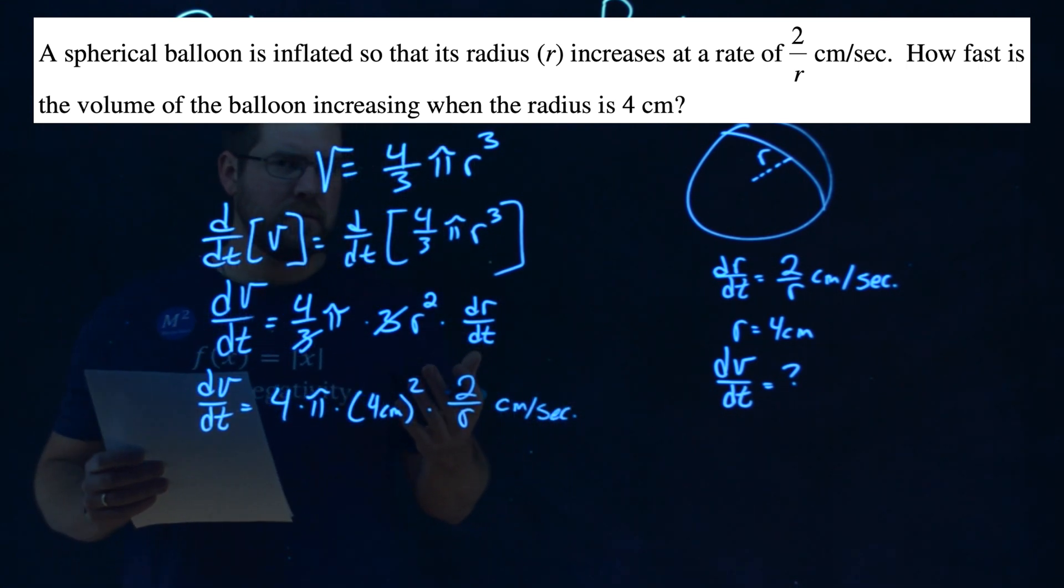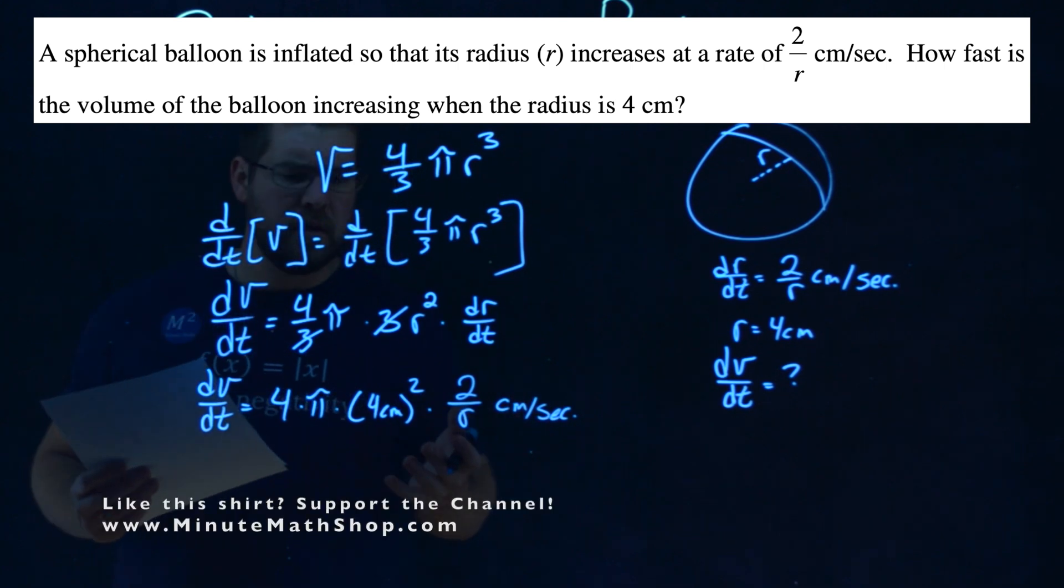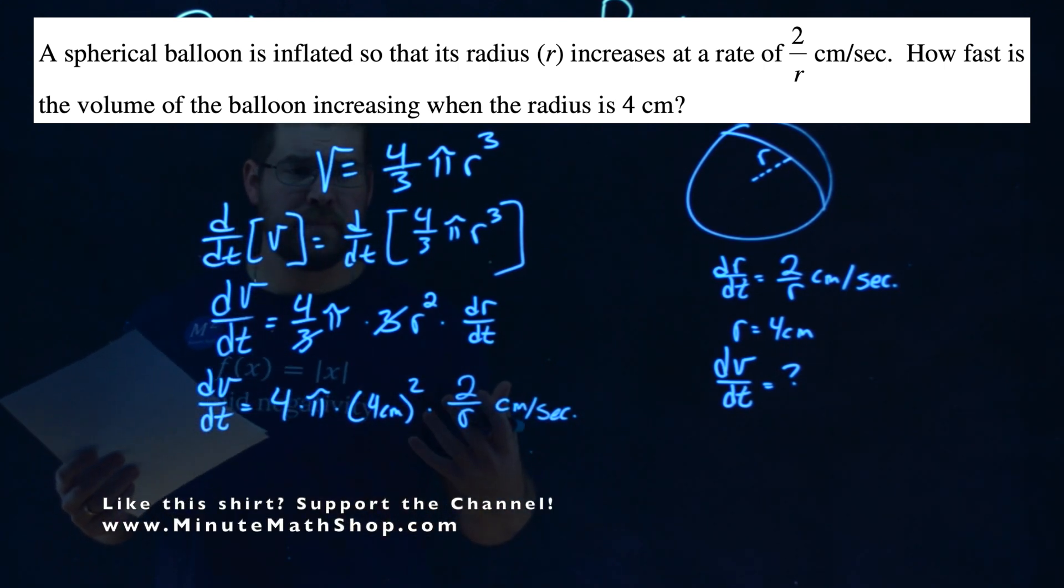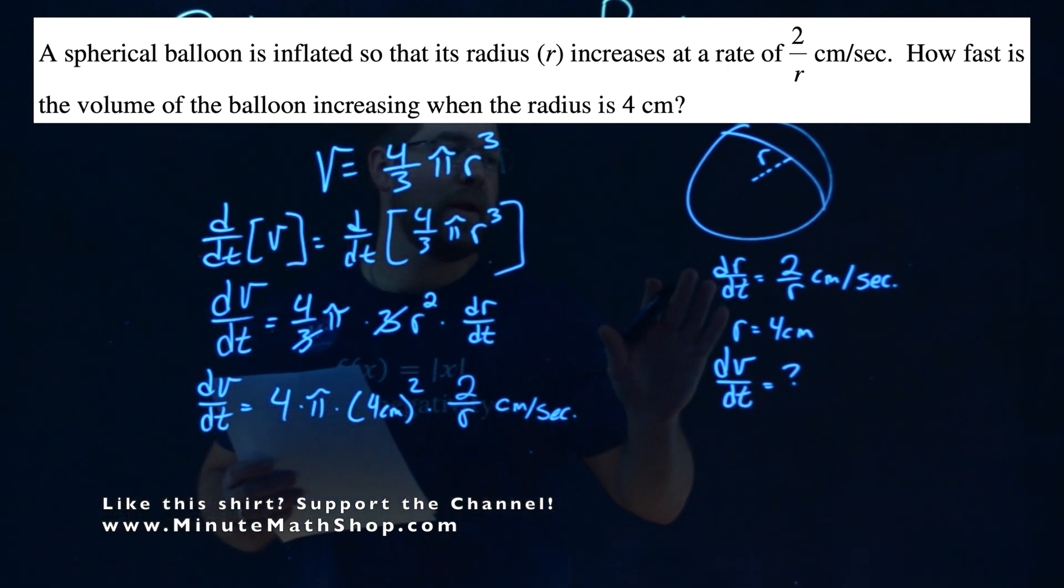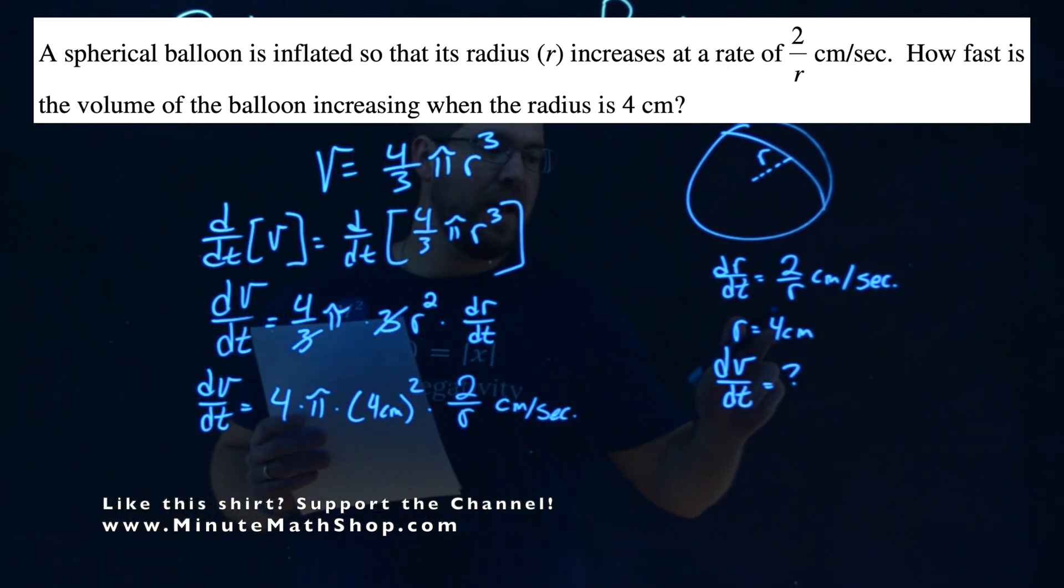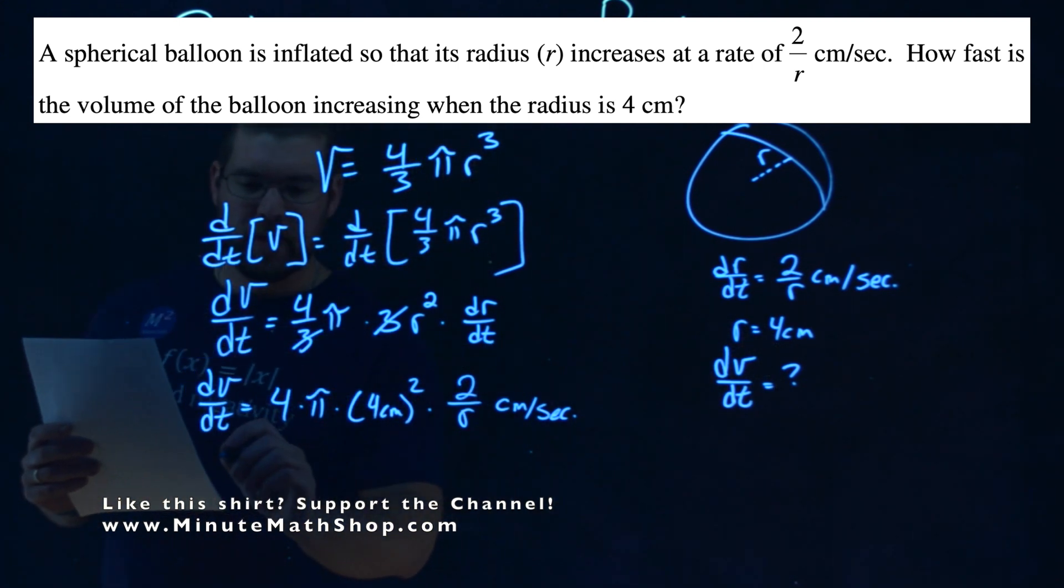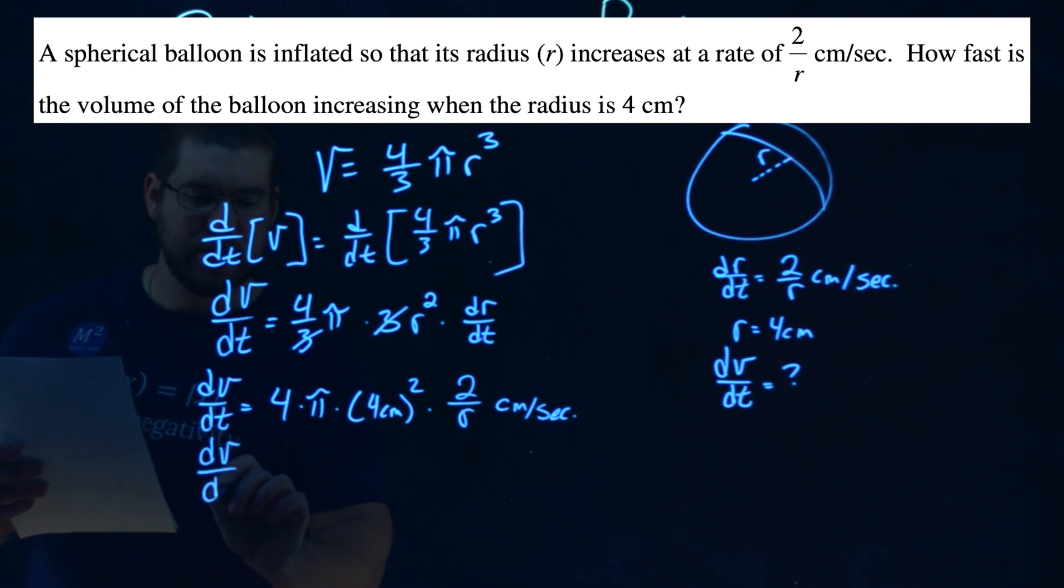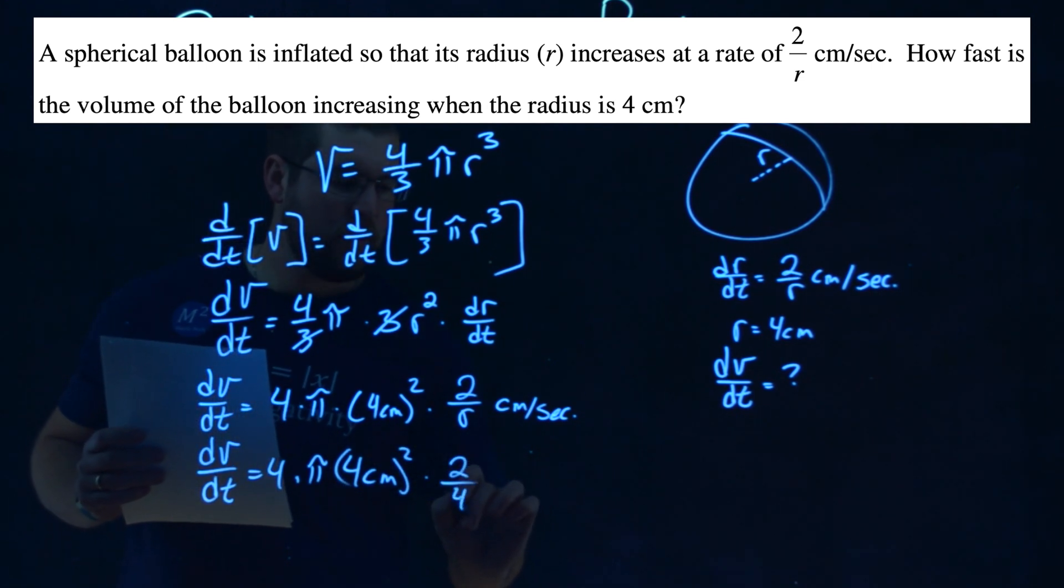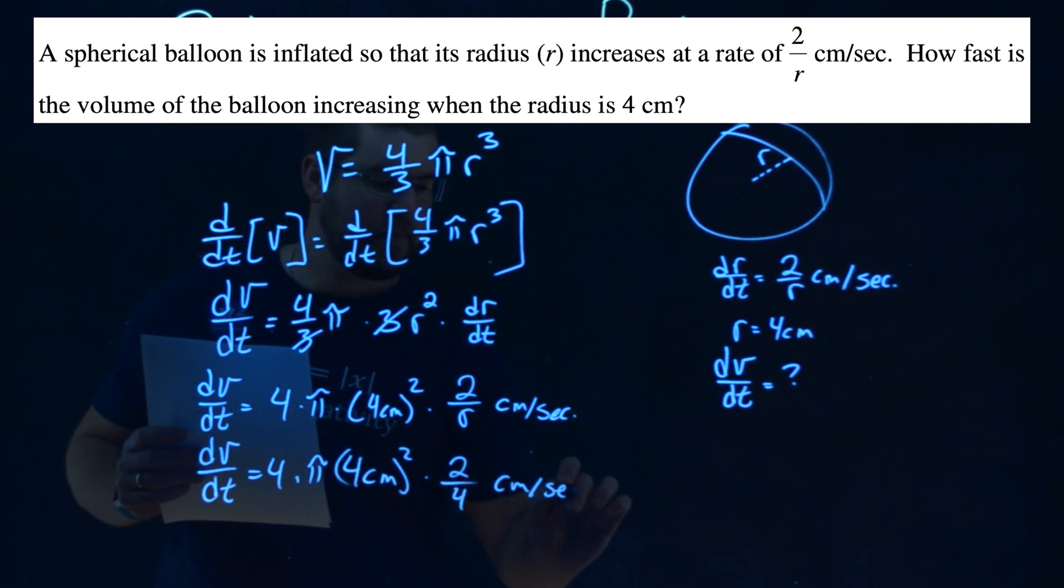But if you're confused here, it's normal. Well, we have a variable in our rate. What's going on? Well, our rate at which the radius is increasing is dependent on where the radius actually is, and the moment we're talking about is at 4. So we plug that in, so we have dv dt is equal to 4 times pi times 4 centimeters squared times 2 over 4 centimeters per second.